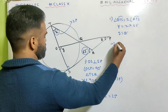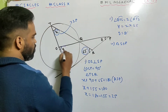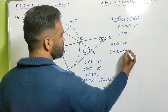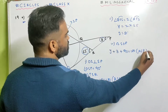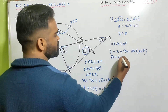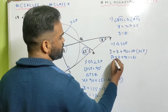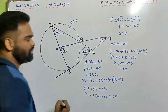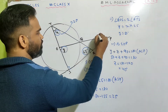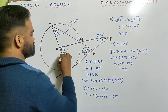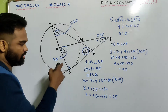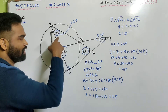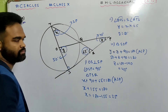Now look at triangle SOP. Y plus Z plus 90 equals 180. 90 plus 50 is 140, so Z equals 180 minus 140, which gives Z equals 40 degrees. Done. Summary: tangent and radius are perpendicular, angle sum property, and angle at the center is twice the angle at circumference.